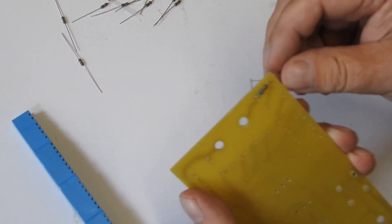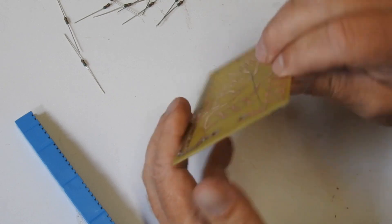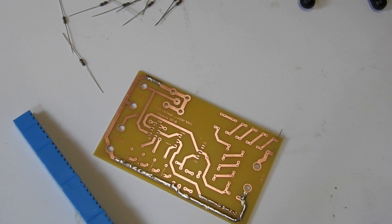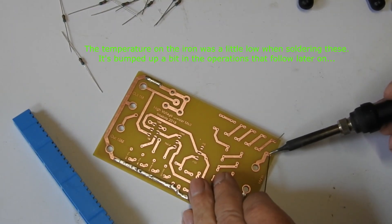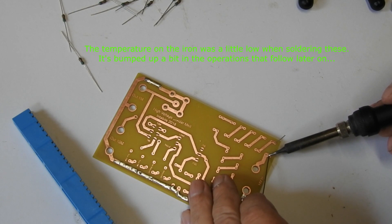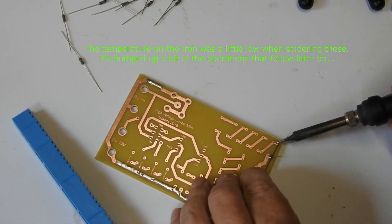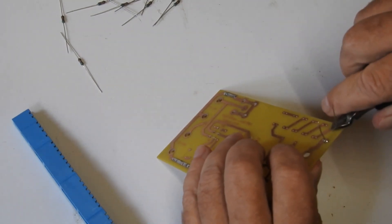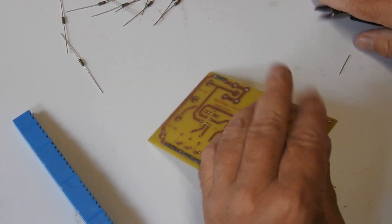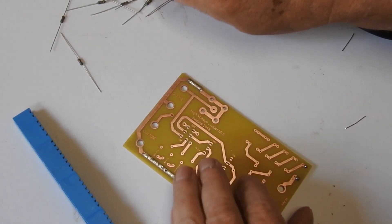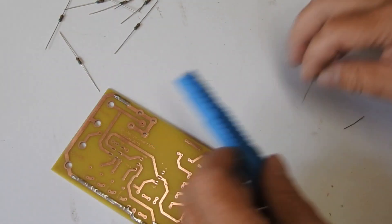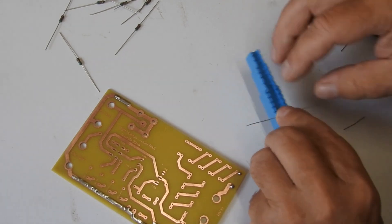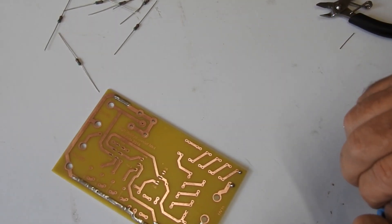And then with the leads up in the air like that, solder and then snip off the leads. Now I think that's the wrong way to do it, and I'm going to describe the way that I was taught, which I believe is better for at least four or five reasons.